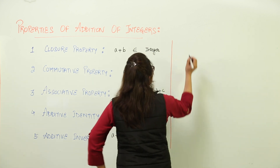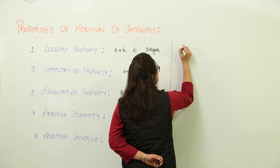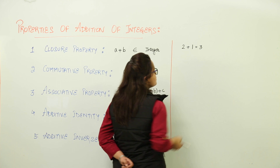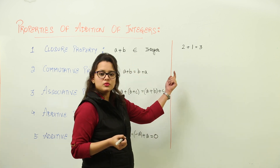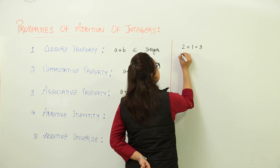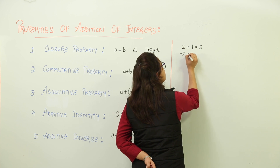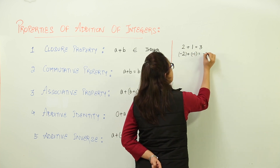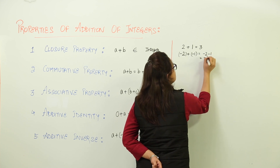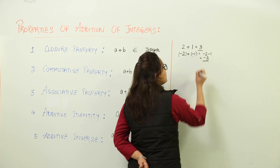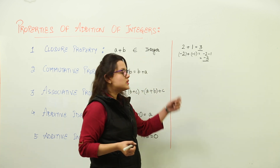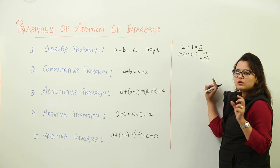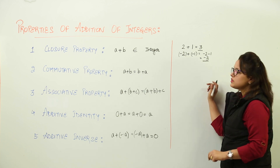Let us take an example. If you have two integers, let's say 2 plus 1, the answer, that is 3, is an integer only. Similarly, if you add minus 2 plus minus 1, what are you going to get? Minus 2 minus 1 is equal to minus 3, which is again an integer. So adding up any two integers gives you an answer which is an integer only.